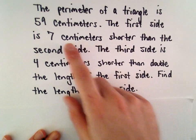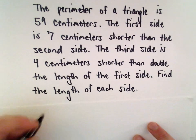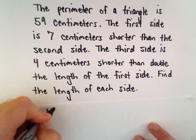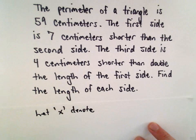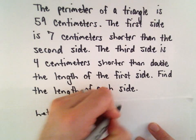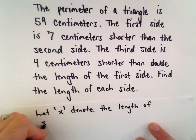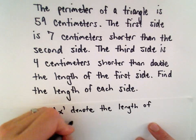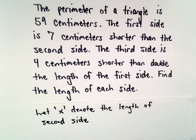The initial statement relates the first side to the second side. So, I'm going to let x denote the length of the second side, just so we can start throwing in some variables here.